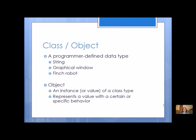We're going to start with what a class and an object is. A class is a programmer-defined data type. It can be a string, a graphical window, or a Finch robot. We haven't done a lot with strings, but remember when you learned how to draw pictures? You had to create an object for that graphical window, that canvas, and that was a class.